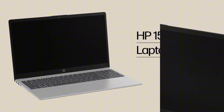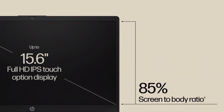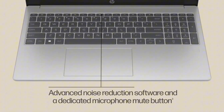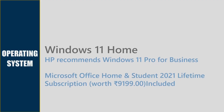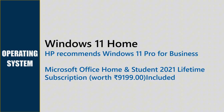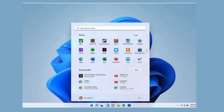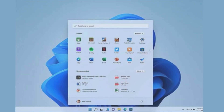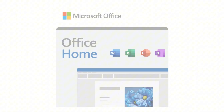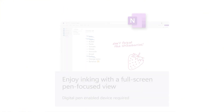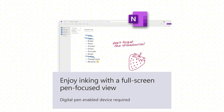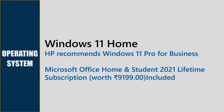For security, there is a Trusted Platform Module, mic mute key, and camera privacy shutter. The operating system is Windows 11 Home 64-bit edition. HP recommends Windows 11 Professional for business use. Microsoft Office Home and Student 2021 with lifetime validity is included at no extra cost.